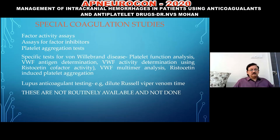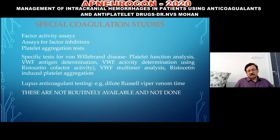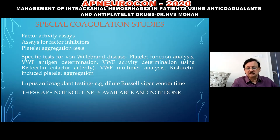Special coagulation studies, though not routinely available in most hospitals, include: platelet aggregation test (important for antiplatelet drug assessment), assay for factor inhibitors, factor activity assays, and lupus antigen testing. These specialized tests—such as dilute Russell viper venom time—should be done when a known clotting disorder is suspected before any emergency surgical intervention.